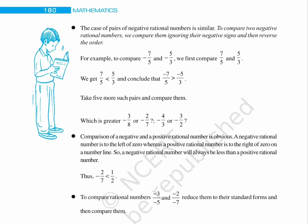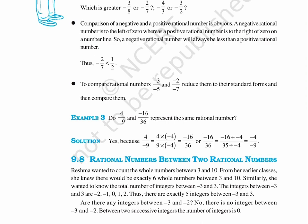Page 180. The case of pairs of negative rational numbers is similar. To compare two negative rational numbers, we compare them ignoring their negative signs and then reverse the order. For example, to compare minus 7 upon 5 and minus 5 upon 3, we first compare 7 upon 5 and 5 upon 3. We get 7 upon 5 is less than 5 upon 3, and conclude that minus 7 upon 5 is greater than minus 5 upon 3. Take 5 more such pairs and compare them. Which is greater: minus 3 upon 8 or minus 2 upon 7? Minus 4 upon 3 or minus 3 upon 2?